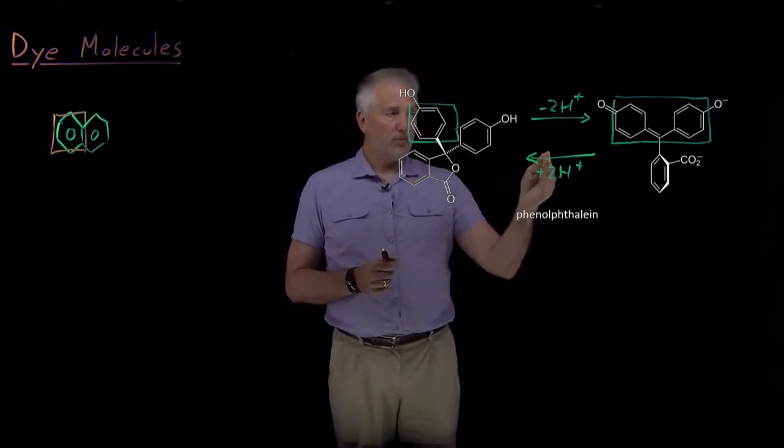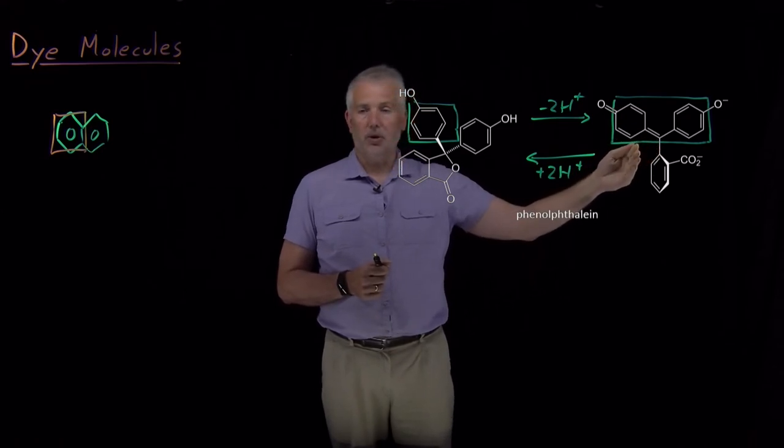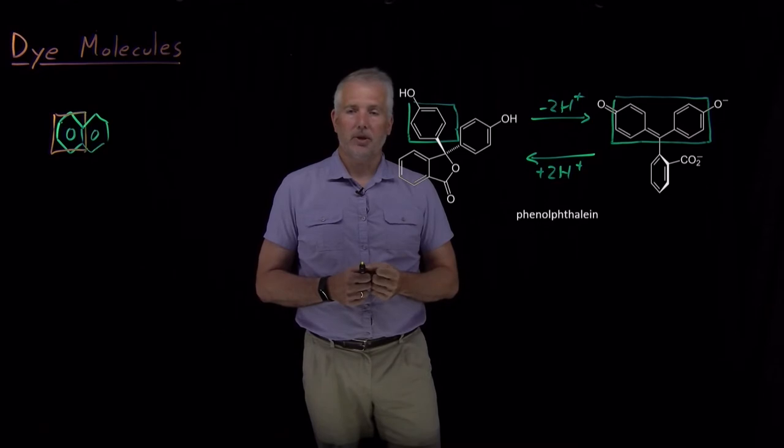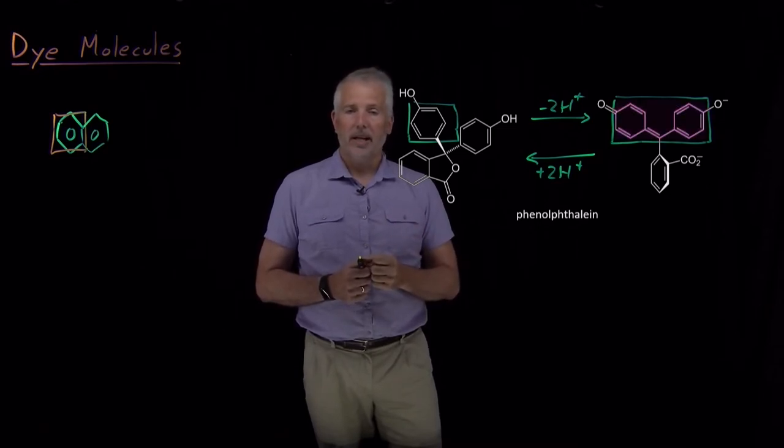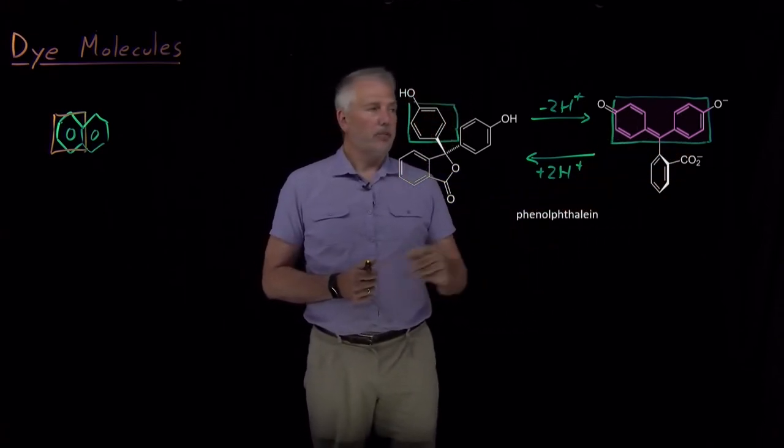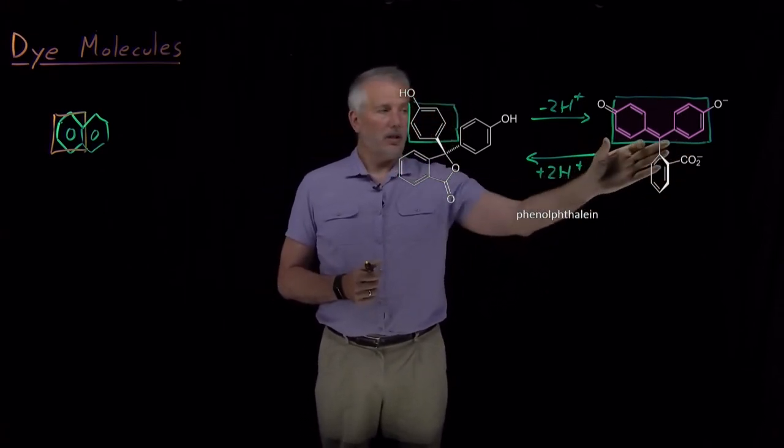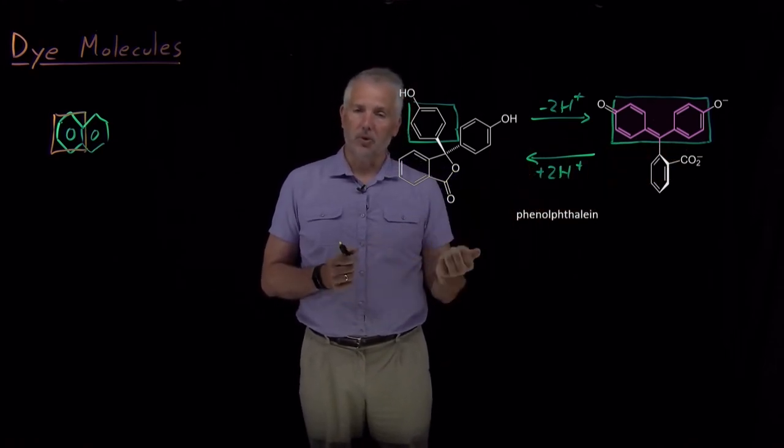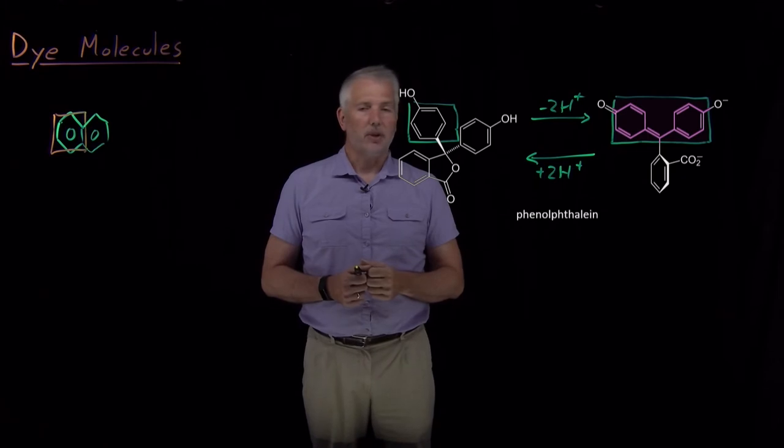It's pushed just large enough now that it absorbs in the highest energy portion of the visible spectrum. It absorbs a little bit of the violet portion, and as a result the color of this molecule ends up looking pink, or the color that it reflects is tinged toward the red side because it absorbs on the violet side.